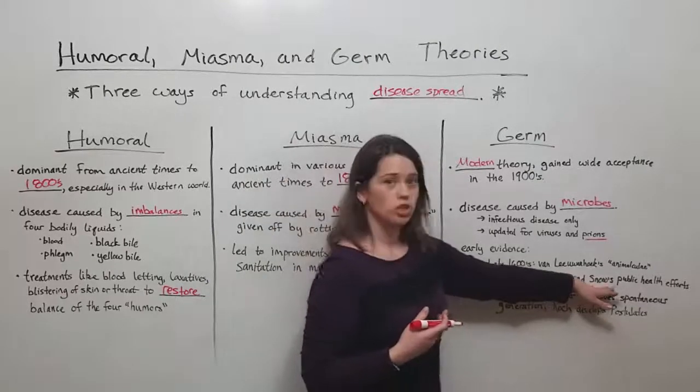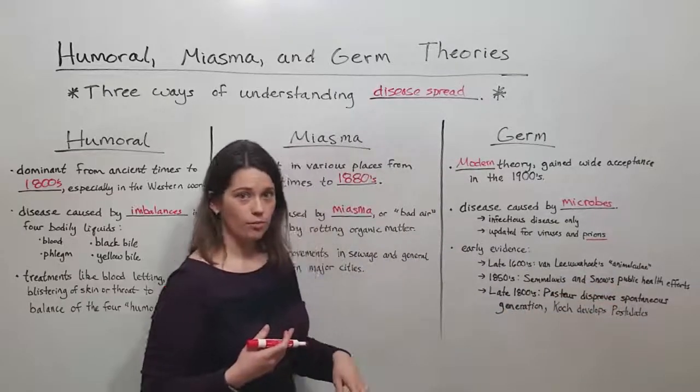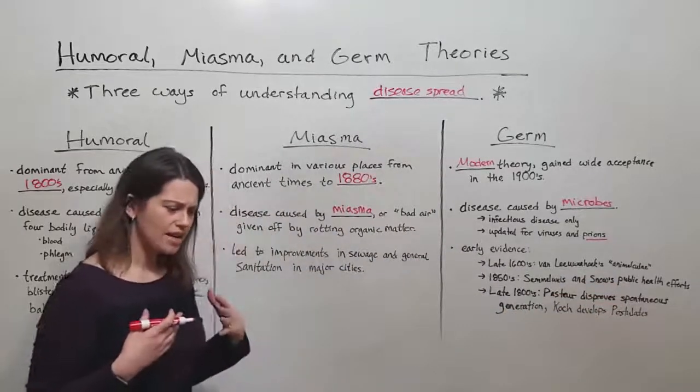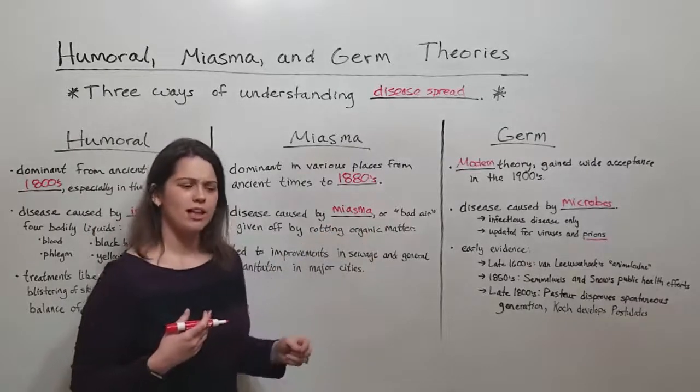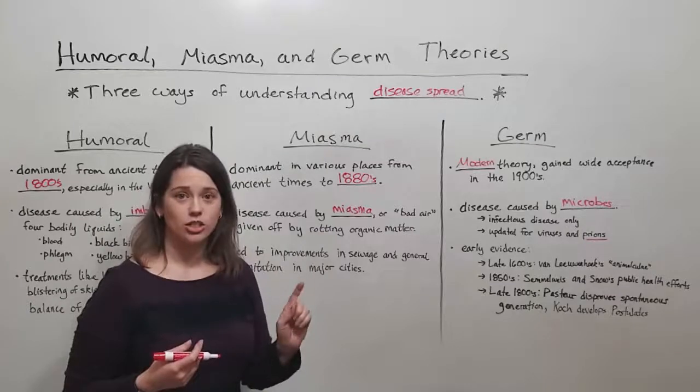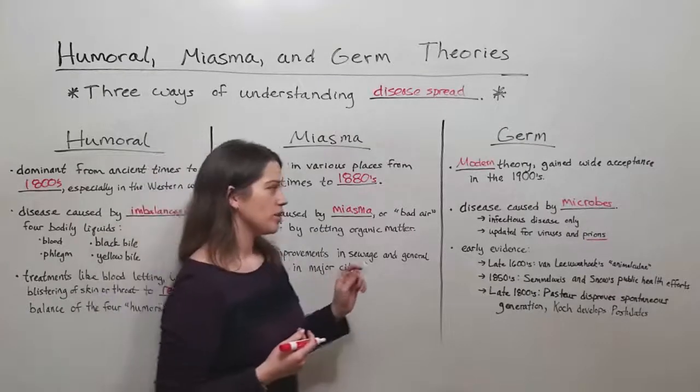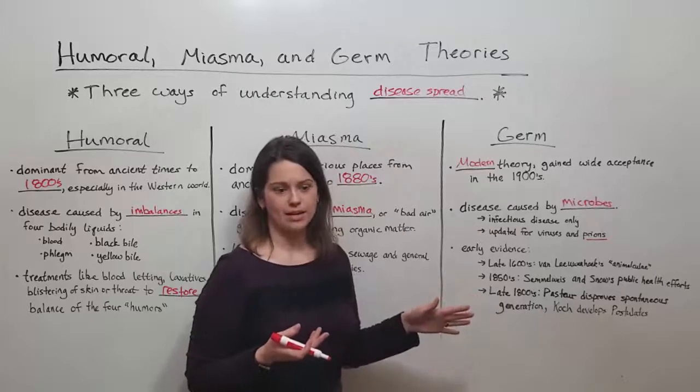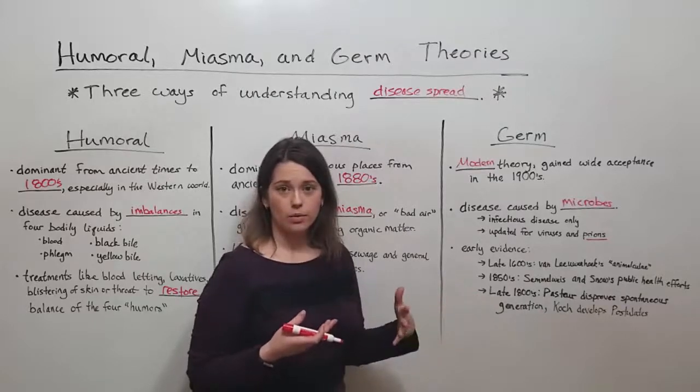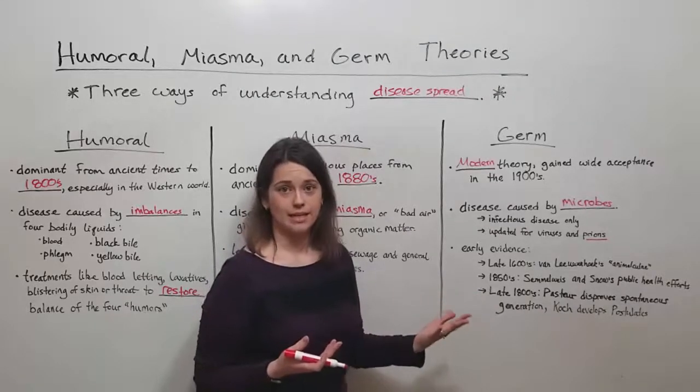Around the same time, John Snow was looking at the cholera outbreak in London and a London health official said it's definitely bad air. And John Snow said that doesn't make sense. I think it's dirty water. And he actually was able to trace it to the Broad Street pump and prove that cholera was a waterborne disease instead of an airborne one.